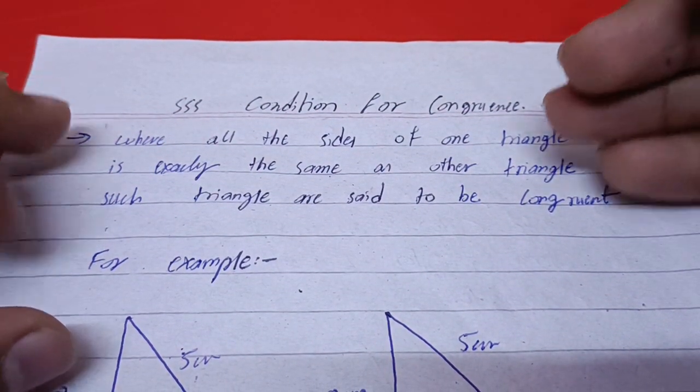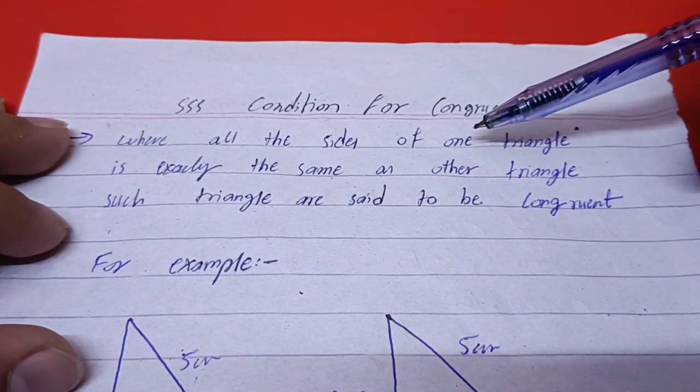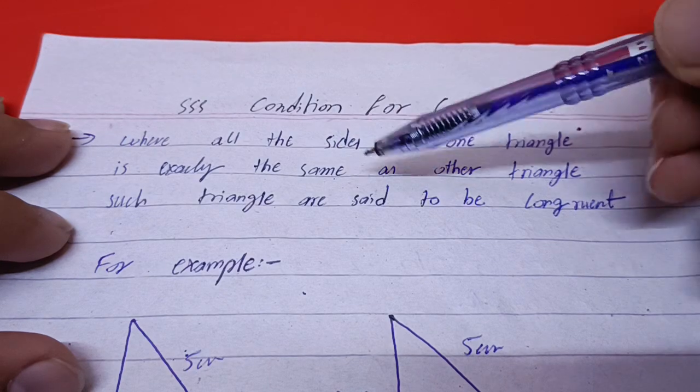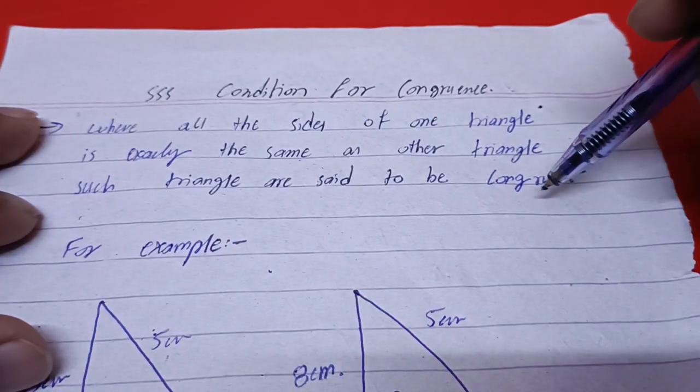So, let's know what this condition is. Where all the sides of one triangle is exactly the same as another triangle, such triangles are said to be congruent.